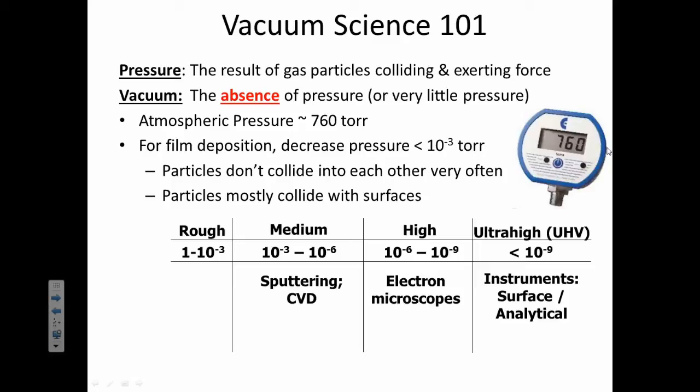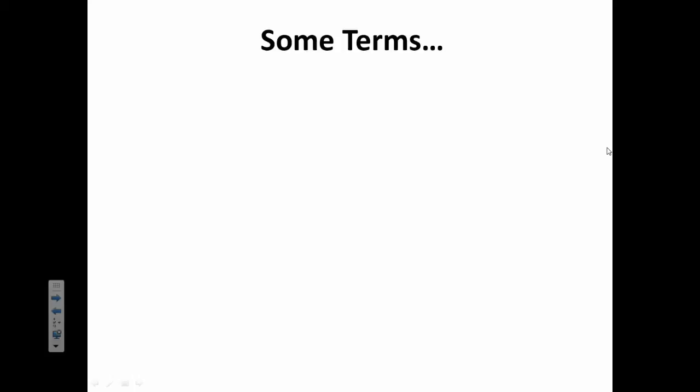A rough vacuum would be something that's between 1 to 10 to the minus 3rd torr. A medium is 10 to the minus 3 to 10 to the minus 6. This is where sputter coating and chemical vapor deposition have to take place. A high vacuum would be 10 to the negative 6 to 10 to the negative 9th. Electron microscopes use this vacuum pressure. And ultra-high vacuum, sometimes known as UHV, is less than 10 to the minus 9th torr. So that's for some surface, analytical, very specific instruments that require that sensitive of a vacuum.